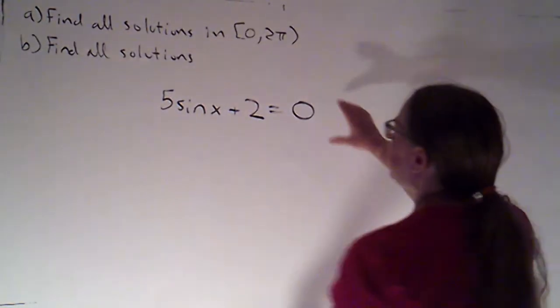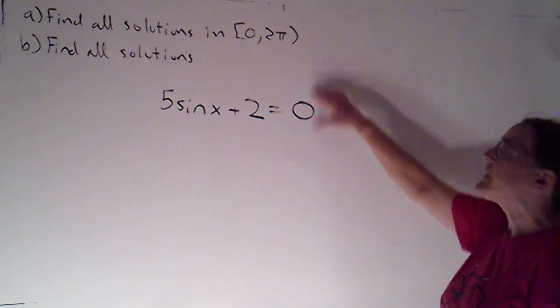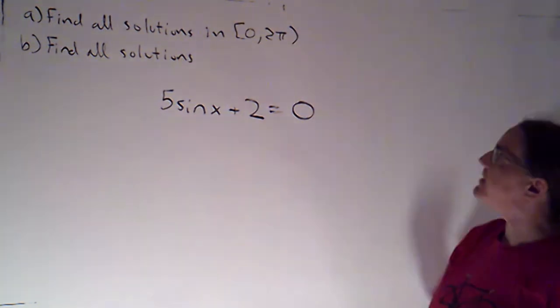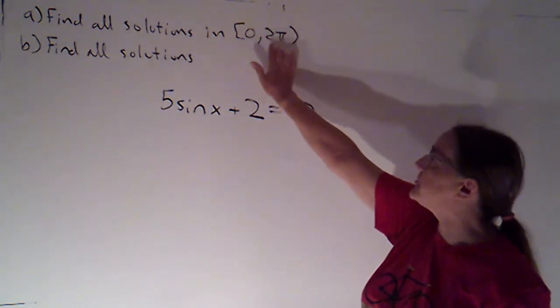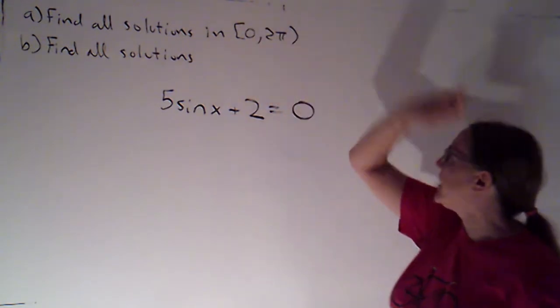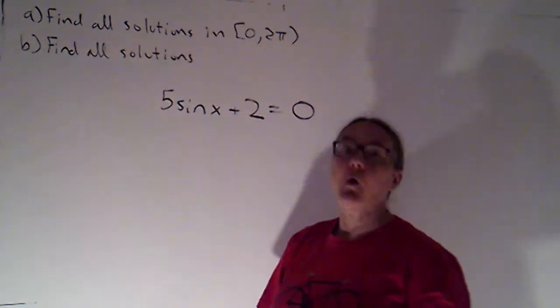I want to try to solve 5 sine x plus 2 equals 0. Directions are the same as they've been. We're going to find all solutions in this interval from 0 to 2π, including 0 not 2π, and then we're going to find all solutions.